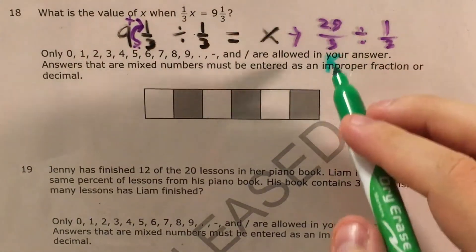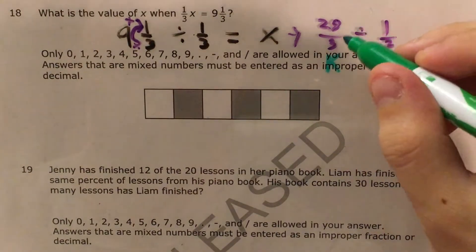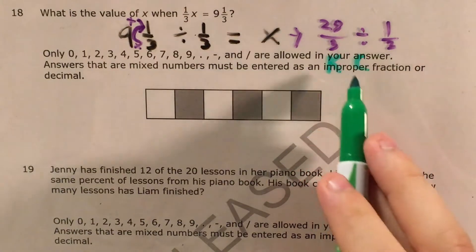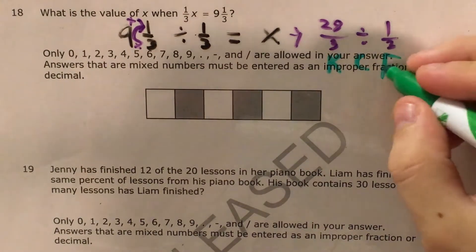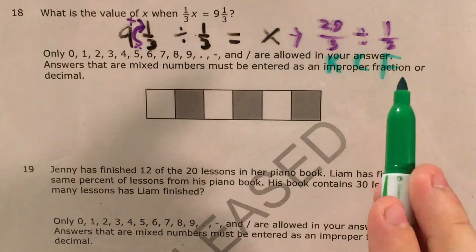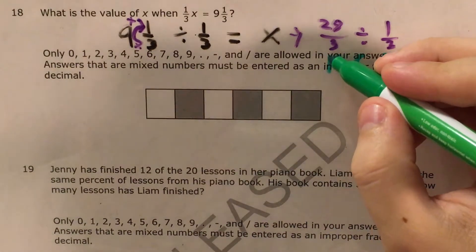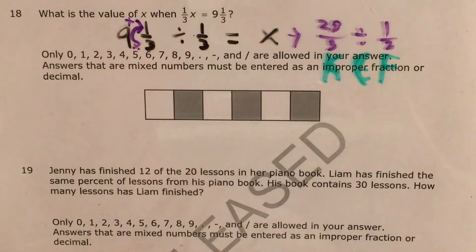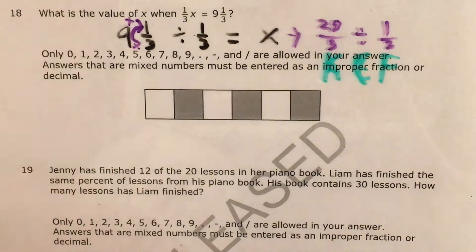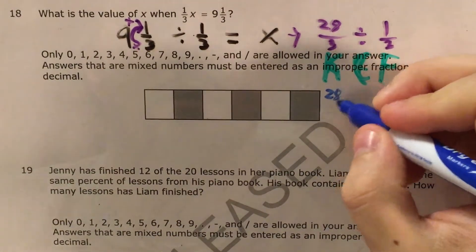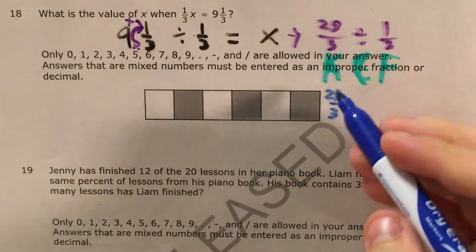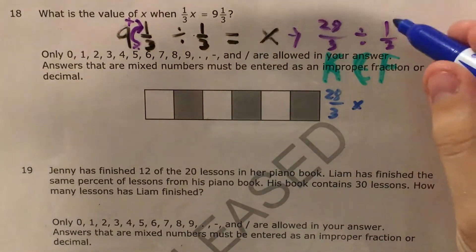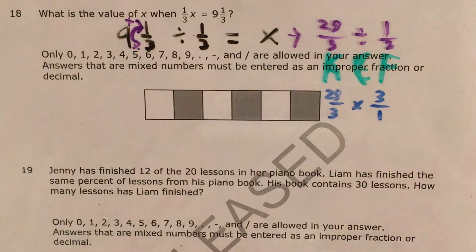So K is for keep. I'm going to keep 28/3 exactly the same. I'm not going to change it. C is for change. I'm going to change division into multiplication. And I'm going to flip 1/3 over. So now it becomes 3/1 or 3 wholes. So keep, change, flip, and what that's going to end up looking like is 28/3 times 3/1.